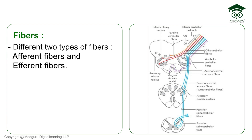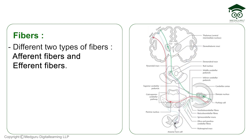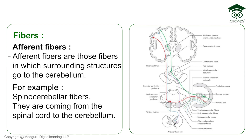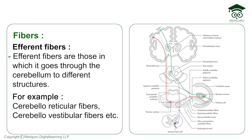Now we need to discuss the different types of fibers present here. There are mainly two types: afferent fibers and efferent fibers. Afferent fibers come from surrounding structures to the cerebellum — for example, spinocerebellar fibers coming from the spinal cord to the cerebellum. When the cerebellum is the last part of the name, like olivocerebellar or spinocerebellar, those are afferent. Efferent fibers go from the cerebellum to other structures, so the name starts with cerebello — like cerebelloreticular or cerebellovestibular.